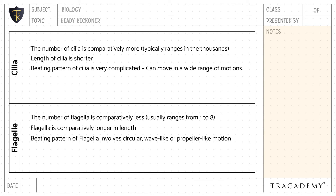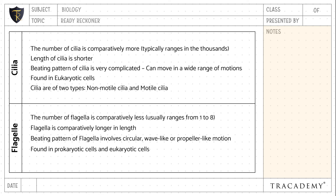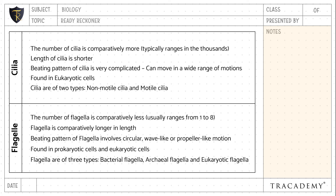The beating pattern of flagella involves circular, wave-like, or propeller-like motion. Cilia are found in eukaryotic cells, whereas flagella are found in prokaryotic as well as eukaryotic cells. Cilia are of two types — non-motile and motile — whereas flagella are of three types: bacterial flagella, archaeal flagella, and eukaryotic flagella.